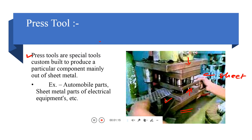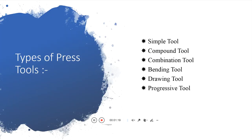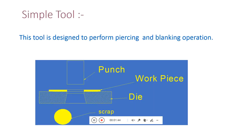Examples of press tool applications include automobile parts, sheet metal parts of electrical equipment, and so on. Now we discuss some types of press tools: simple tool, compound tool, combination tool, bending tool, drawing tool, and progressive tool.